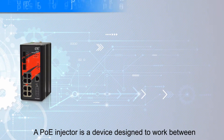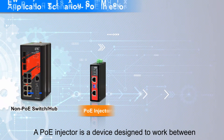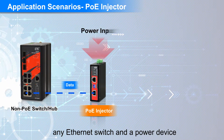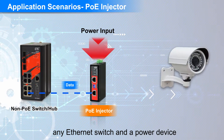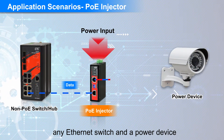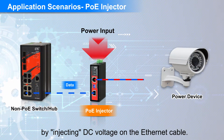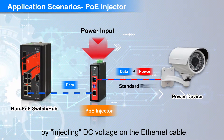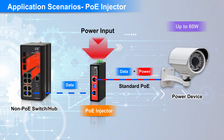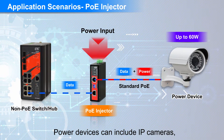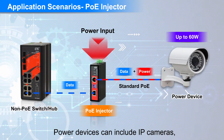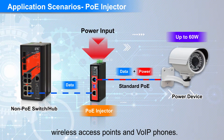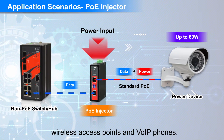A PoE injector is a device designed to work between any Ethernet switch and a power device by injecting DC voltage on the Ethernet cable. Power devices can include IP cameras, wireless access points, and VoIP phones.